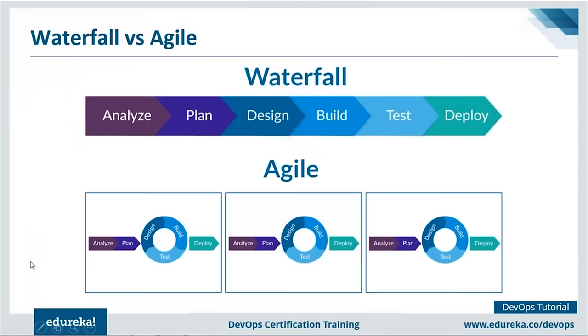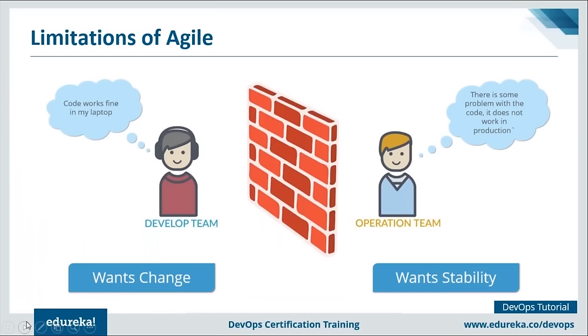The biggest limitation of agile is that the development and testing used to happen continuously, but deployment was not continuous. There were still conflicts between the dev and ops sides of the company - dev wants agility whereas ops wants stability. A very common conflict: code works fine in the developer's laptop but when it reaches production there's a bug, due to inconsistency in the computing environment.